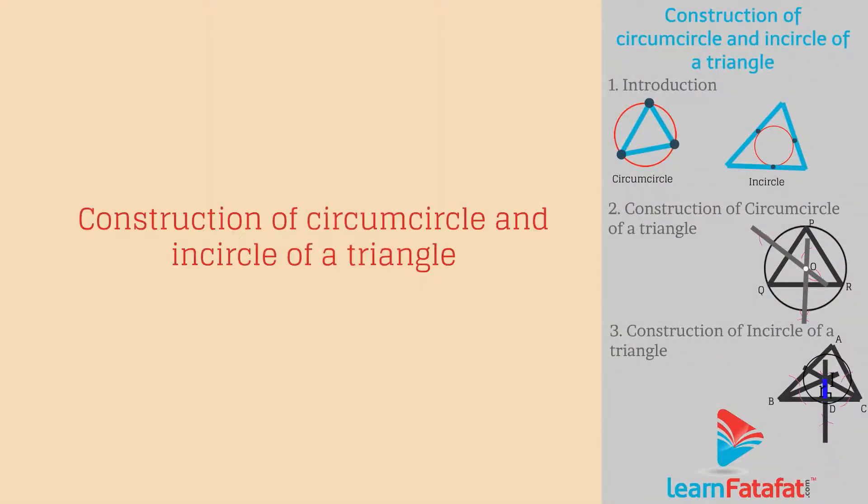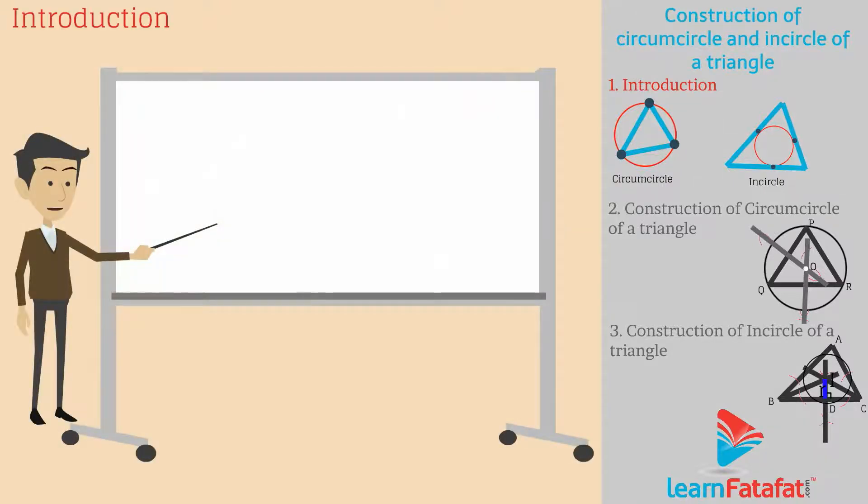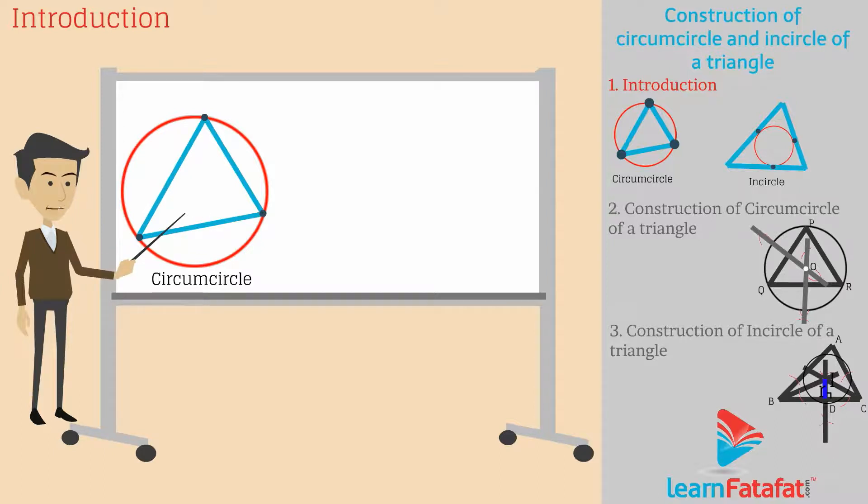Construction of circumcircle and incircle of a triangle. Introduction. Dear students, a circumcircle to a triangle signifies that the circle passes through all the vertices of a triangle.